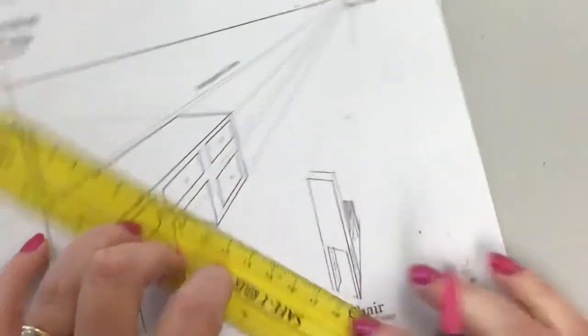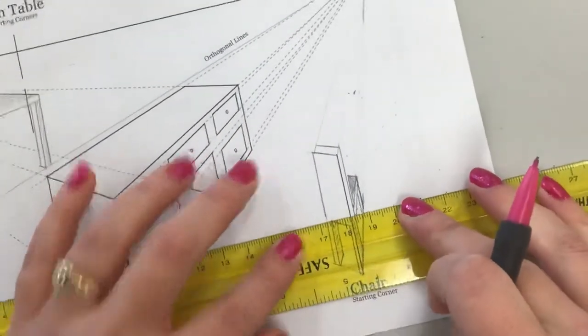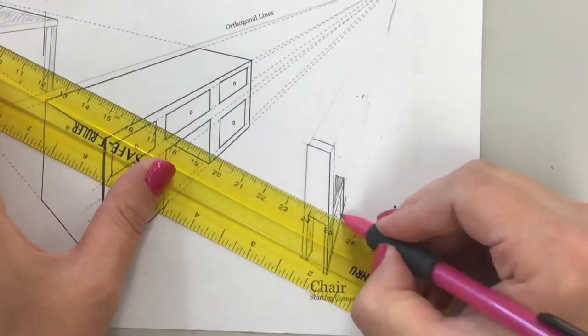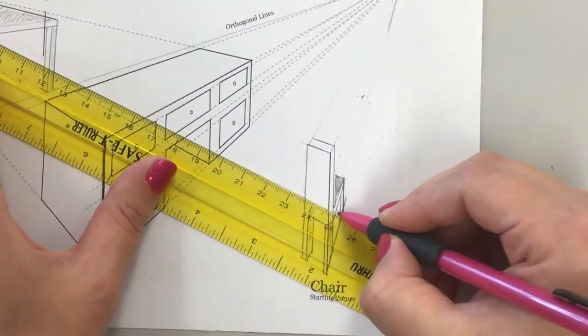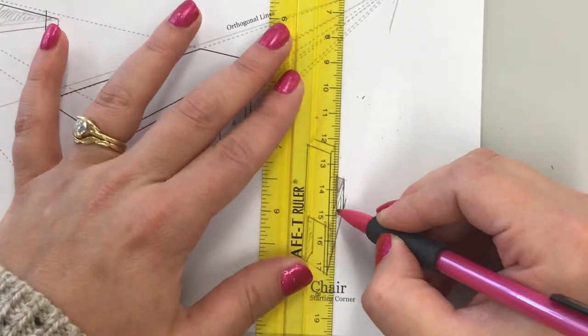Come down. Come to the left vanishing point. For the back part. And then this is very skinny. I'll just come straight up.